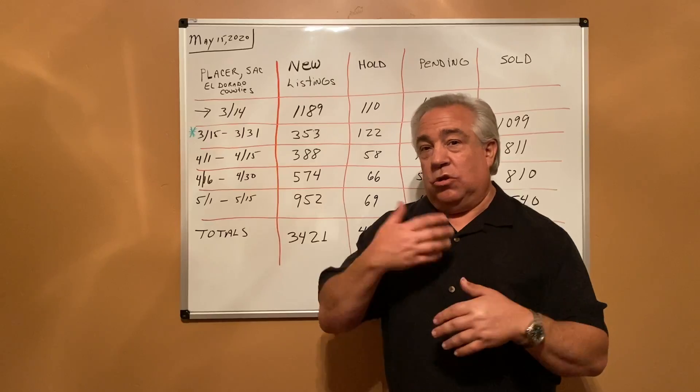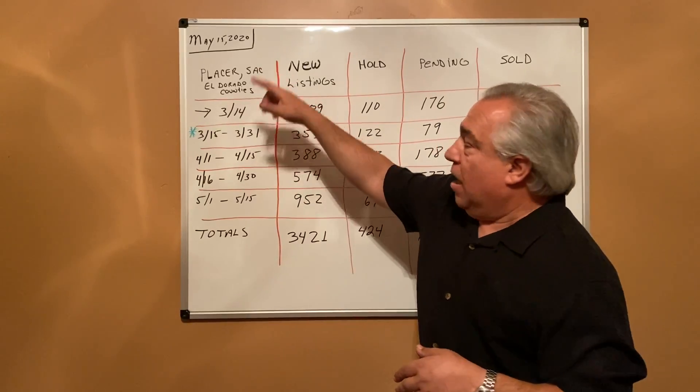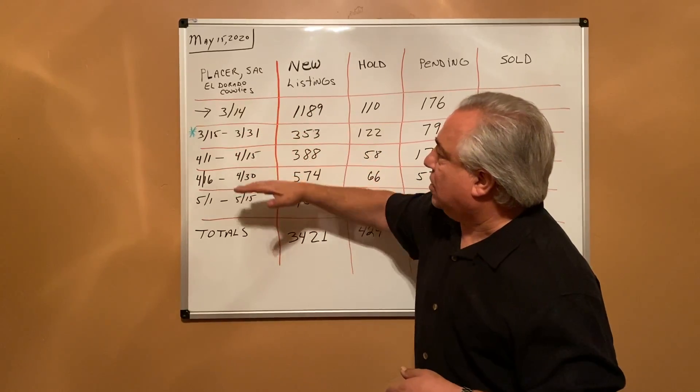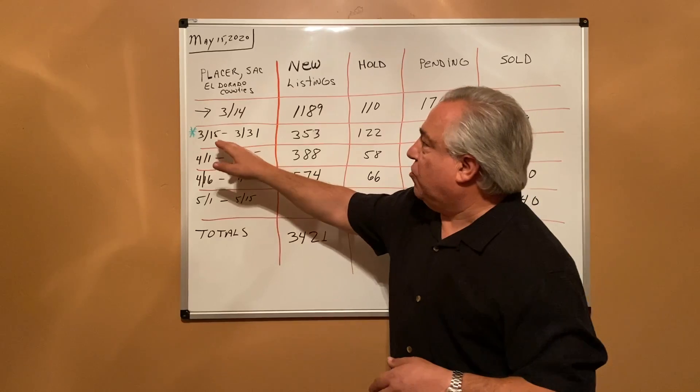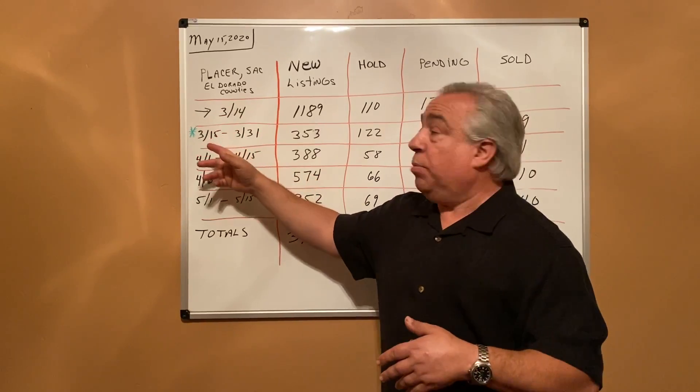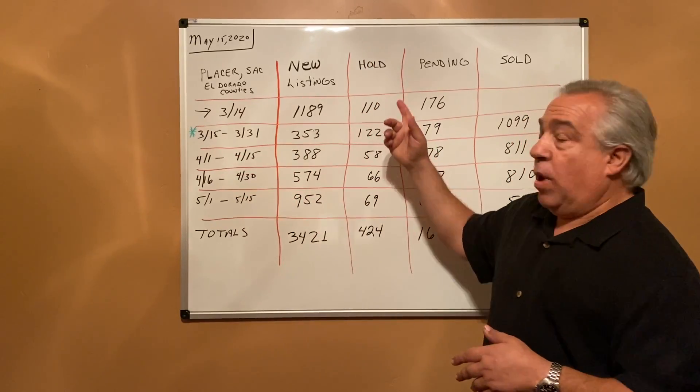I took Placer, Sacramento, and El Dorado counties and broke it down into two-week segments starting March 15th. What was significant about that was when the stay-at-home order went into place. I want to look at new listings, homes that went in a hold status, homes that went pending under contract, and the actual sales.